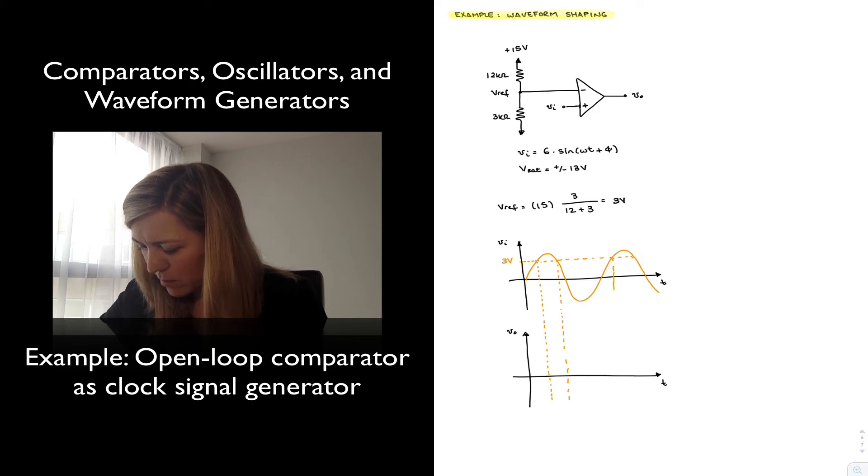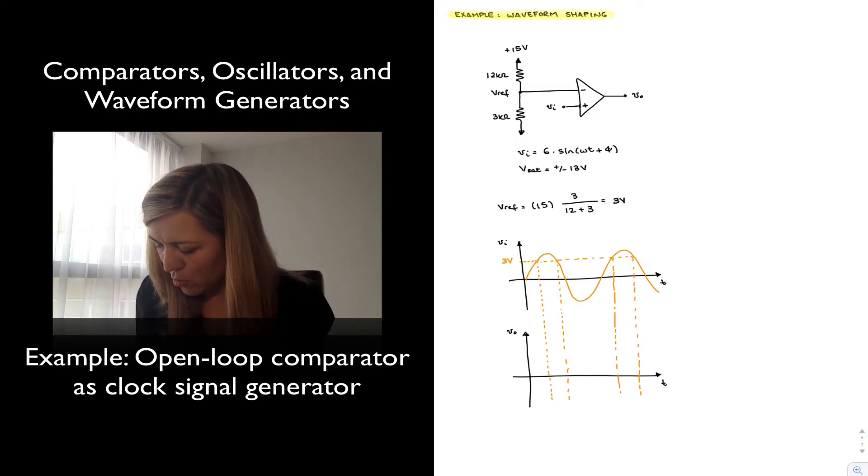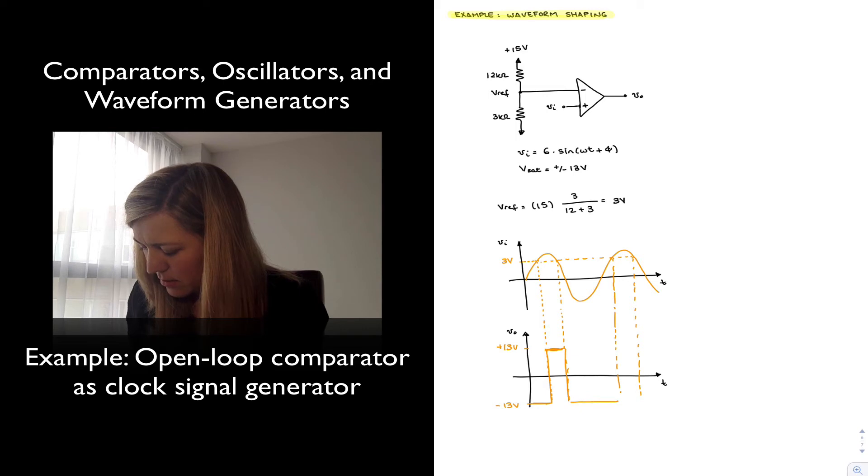So I'm just labeling the 3 volt crossing points for my input signal and now I can draw my output signal. It's going to go between negative saturation voltage or negative 13 volts and positive 13 volts, a square signal which is high whenever my input signal is higher than 3 volts and low otherwise.